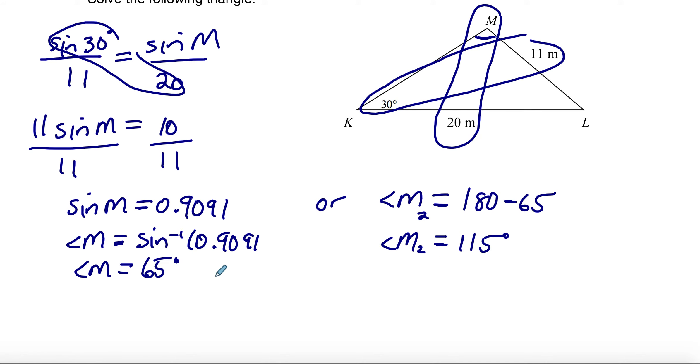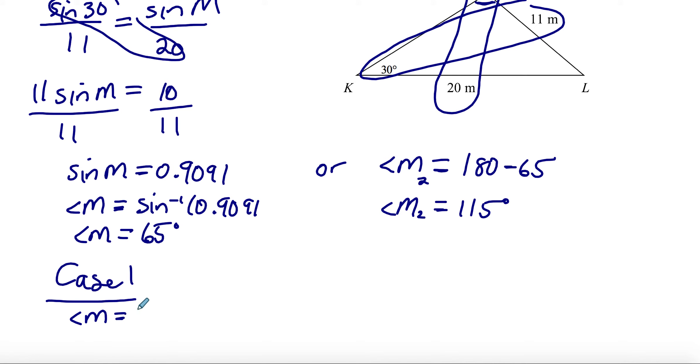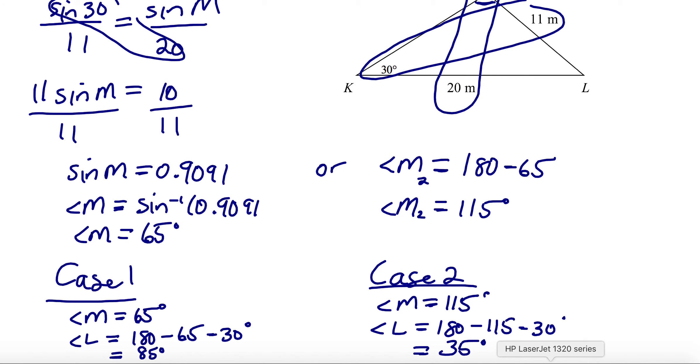Case 1: angle M is 65. Then angle L, which is the one that we still don't know, we have 180 minus 65 minus 30, the one that was given from the beginning. We could find angle L to be 85 degrees. Case 2: what if angle M was 115? Then angle L is going to be 180 minus 115 minus the 30 that we were given. So angle L might be 35 degrees. We have two possible values for angle L.